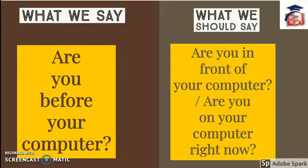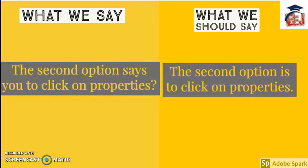This is the correct phrase when you want to ask someone whether they are working on a computer or not. The second option says 'you to click on properties' — instead of this you should say 'The second option is to click on properties.' This is the correct way of presenting options.